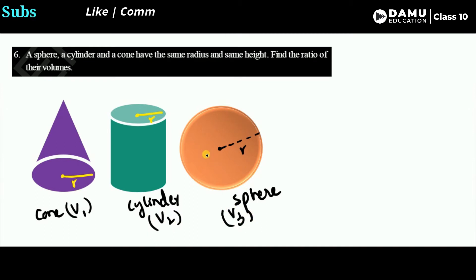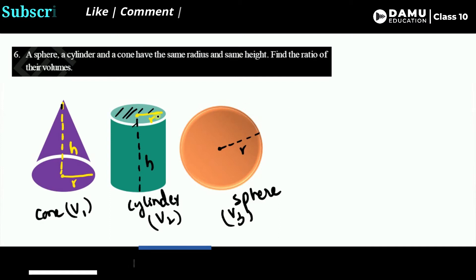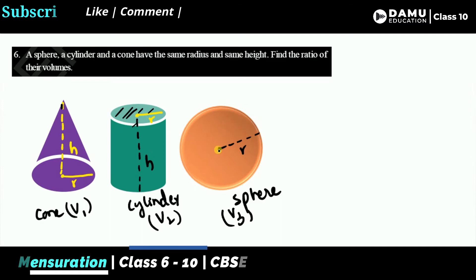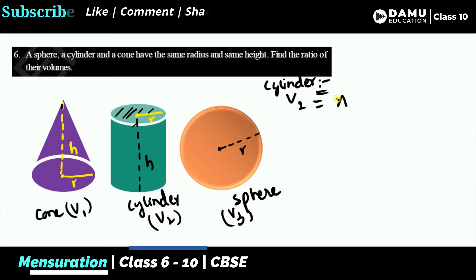Let's recall the formulas. The volume of a cylinder: think of the circle extended up to the height h. The height of the shape is h. The volume is the circle area multiplied by one dimension — the height. So volume of the cylinder, V2, is pi r squared into h.